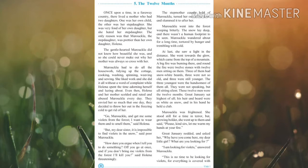Children, in this story the writer is telling us about one family. There is one lady who has two daughters — one is Holina, her own daughter, and the second is Marukula, her stepdaughter. In the last webinar I explained the meaning of stepdaughter and stepmother. The gentle-hearted Marukula did not know how beautiful she was and she could never make out why her mother was always so cross with her.